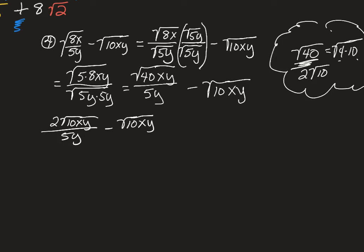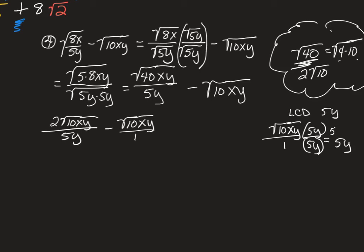However, I have a fraction here, and not a fraction there. Or do I? Because you can always express any number as a fraction over 1. I have a fraction minus a fraction. I have to find a common denominator. In fact, my least common denominator here is, well, it's going to have to be 5y. So what I have to ask myself is, what do I have to do with square root of 10xy over 1 to give it a denominator of 5y? And the answer is, I need to multiply it by 5y in the numerator and the denominator.